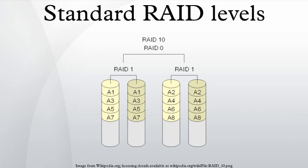Array failure rate is given as an expression in terms of the number of drives and the drive failure rate, and can be seen to be a Bernoulli trial. For example, if each of three drives has a failure rate of 5% over the next three years and these drives are arranged in RAID 3, then this gives a corresponding array failure rate over the next three years. Alternatives to the above designs include nested RAID levels, non-standard RAID levels, and non-RAID drive architectures.